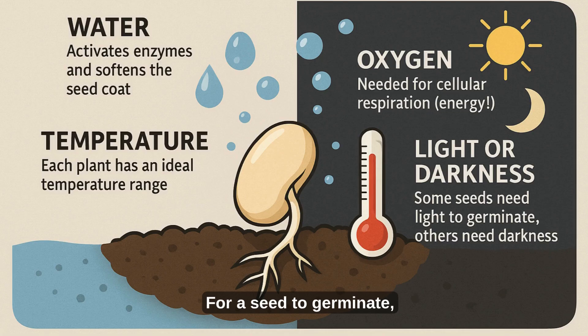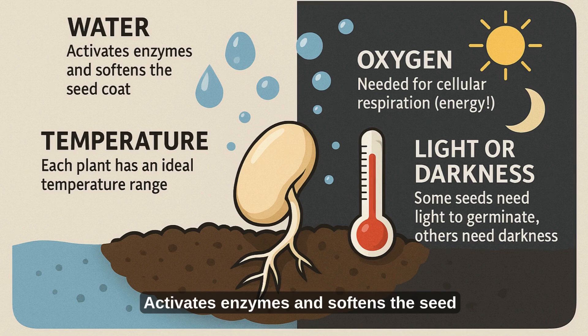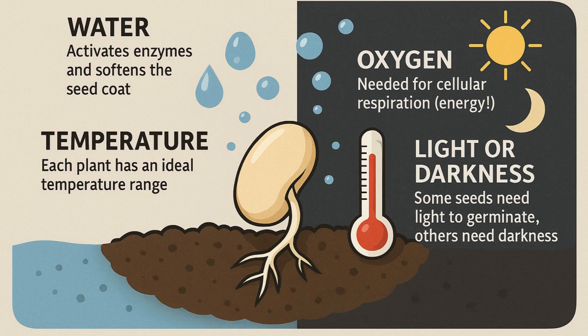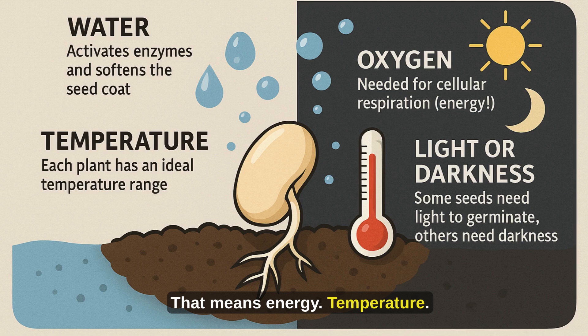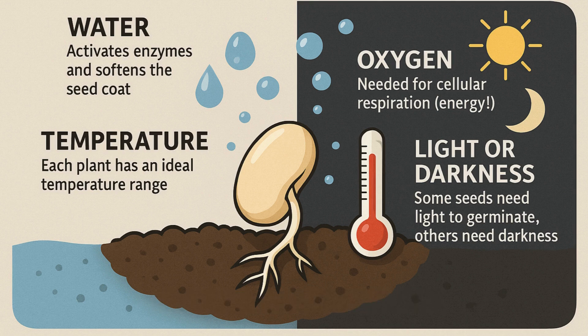For a seed to germinate, four main conditions must be met. Water — activates enzymes and softens the seed coat. Oxygen — needed for cellular respiration, that means energy. Temperature — each plant has an ideal temperature range. Light or darkness — some seeds need light to germinate, others need darkness.